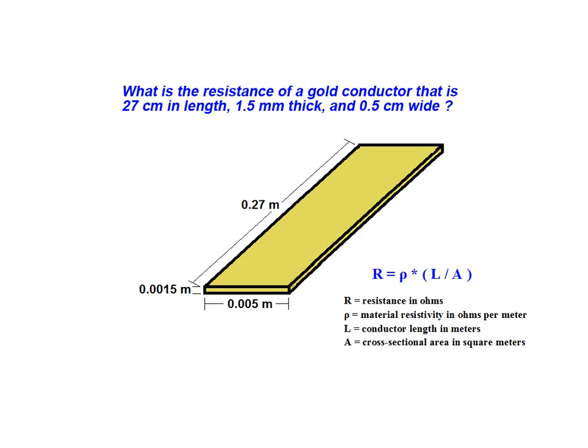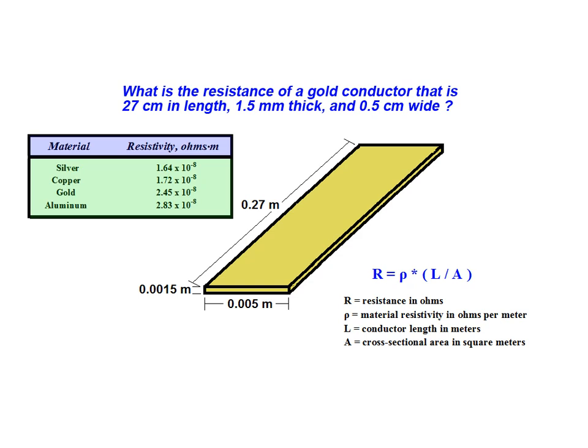Next, we acquire the specific resistance or resistivity of the conductor material. As shown in the table provided, gold has a resistivity of 2.45 times 10 to the power of negative 8 ohms per meter at 20 degrees Celsius.